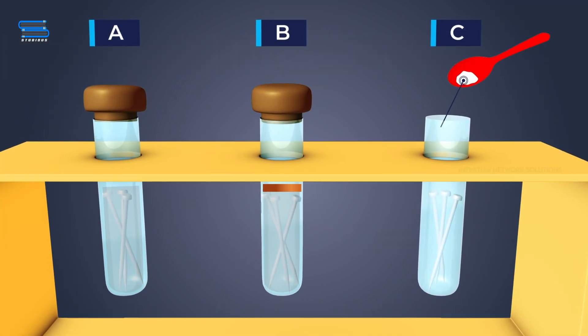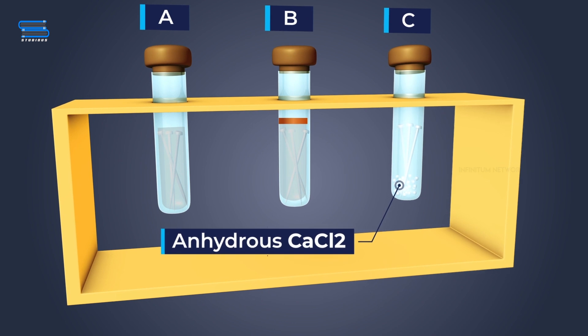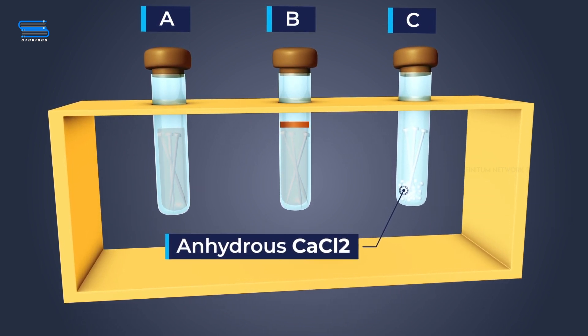A small amount of anhydrous calcium chloride should be added to test tube C, and it should be corked. The moisture which will be present in this test tube will be absorbed by the anhydrous calcium chloride.